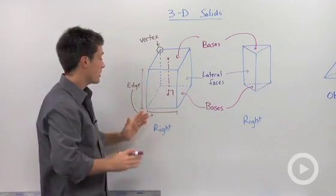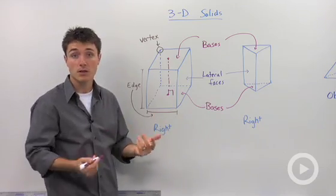When you have two faces that intersect, you're going to create an edge. So an edge is going to be a line segment.